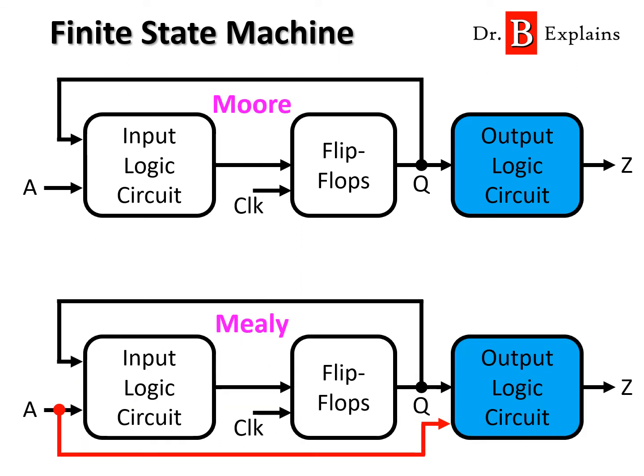Here we can see the different structures for the Moore and the Mealy-type machines. In the top diagram, you can see that the primary inputs are not fed to the output logic. In the Mealy-type, shown in the below diagram, the primary inputs are fed to the output circuits, as you can see in the red wiring.